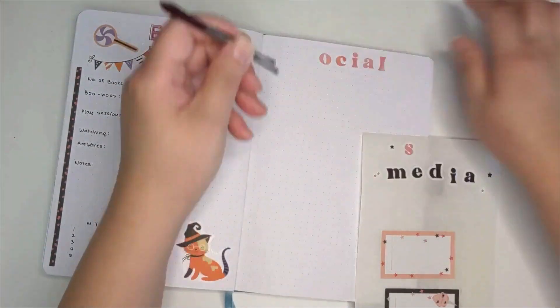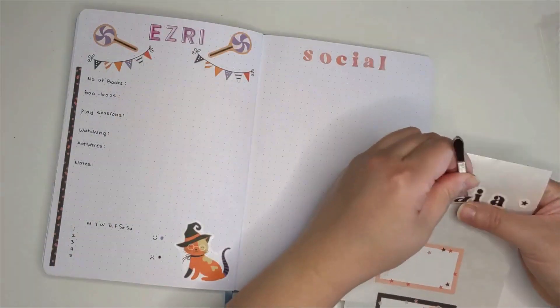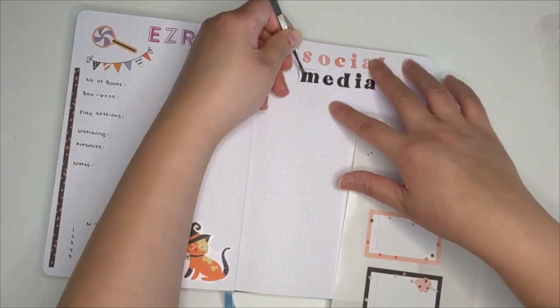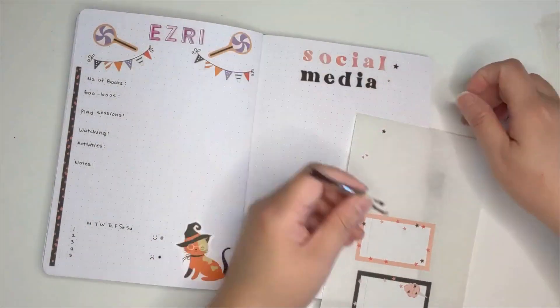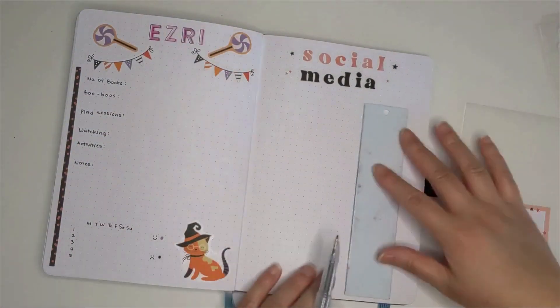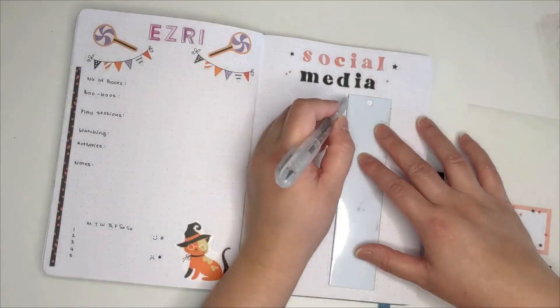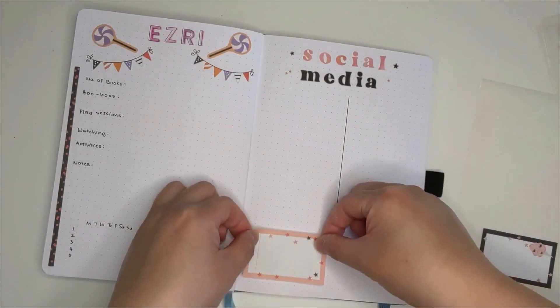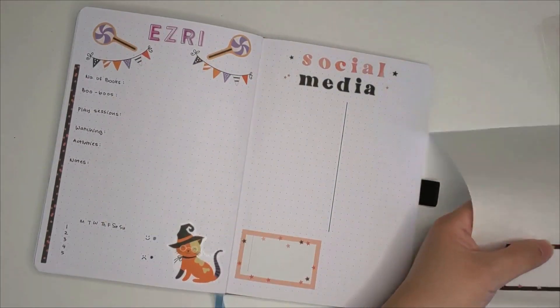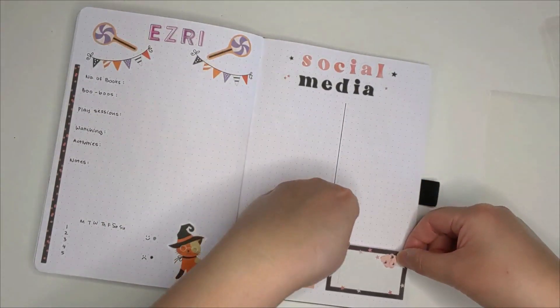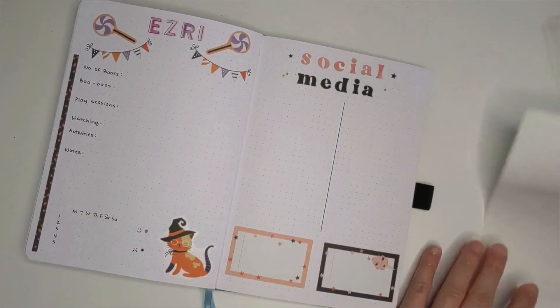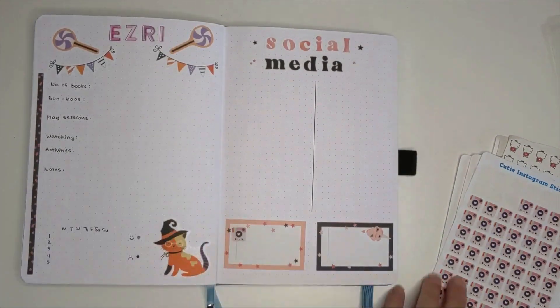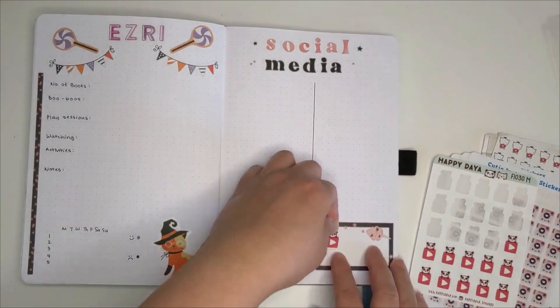Next page is my social media page where I track my posts and uploads on Instagram and YouTube. I do have a separate place to plan out my videos, but for the bullet journal I'm just going to track the posting tasks. I also do keep some stats just to see whether there's some growth in my accounts. For the icon stickers, they are from Happy Cutie Studio and Happy Dayer sticker shops.